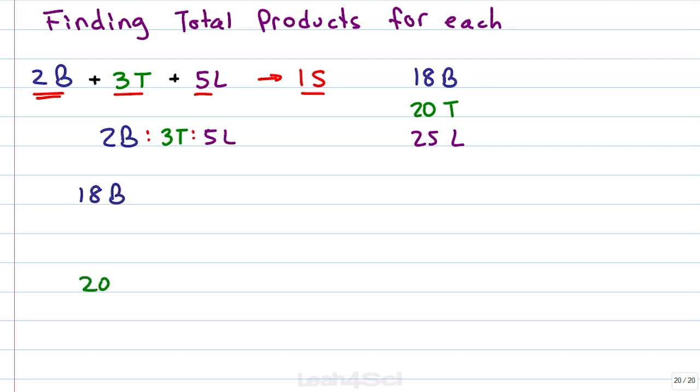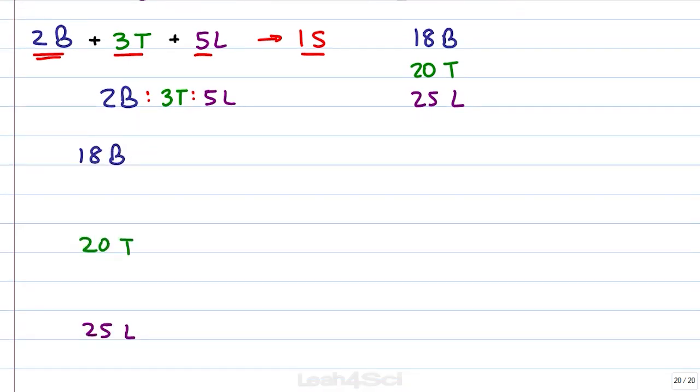Once again we're going to set it up as a given times ratio with 1 equation for each reactant. We'll have our 18 breads, 20 turkeys and 25 lettuce. The ratio that we're going to use is simply the reactant compared to the product. Our first ratio has 2 slices of bread for every 1 sandwich. Bread goes on the bottom so that we can cancel out. Our second reaction has 3 slices of turkey for every 1 sandwich. Our third reaction has 5 pieces of lettuce for every 1 sandwich.